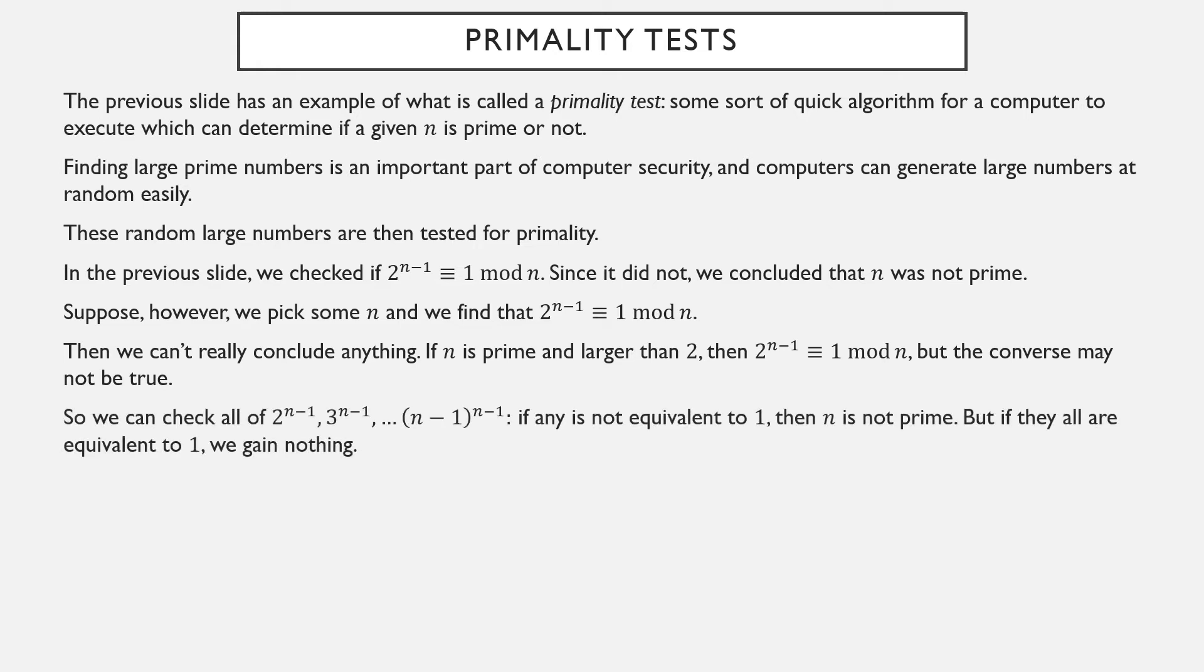So, what we can do is check 2 to the n minus 1, but then also check 3 to the n minus 1, and 4 to the n minus 1, and so forth, all the way up to n minus 1. Notice that none of these numbers are multiples of n - they're too small. So, if n is prime, all of these must be equivalent to 1 mod n. If any one of them fails to be equivalent to 1 mod n, then n was not prime. But even if they're all equivalent to 1 mod n, you actually can't conclude that n is prime.